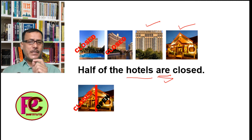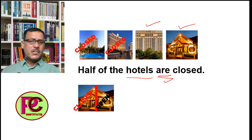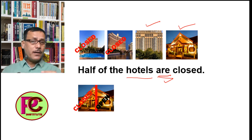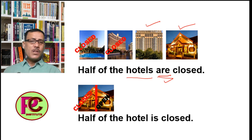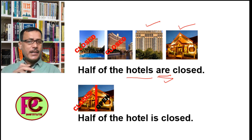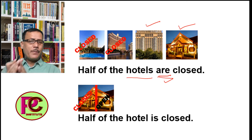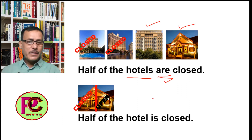Next, in this picture there is only one hotel, and perhaps half of it is under repair and the other half is open. So we say 'half of the hotel' — not 'hotels', because there is only one hotel. A singular noun, even if you take half, one third, or one fourth of it, it remains singular. So the verb will always be singular.